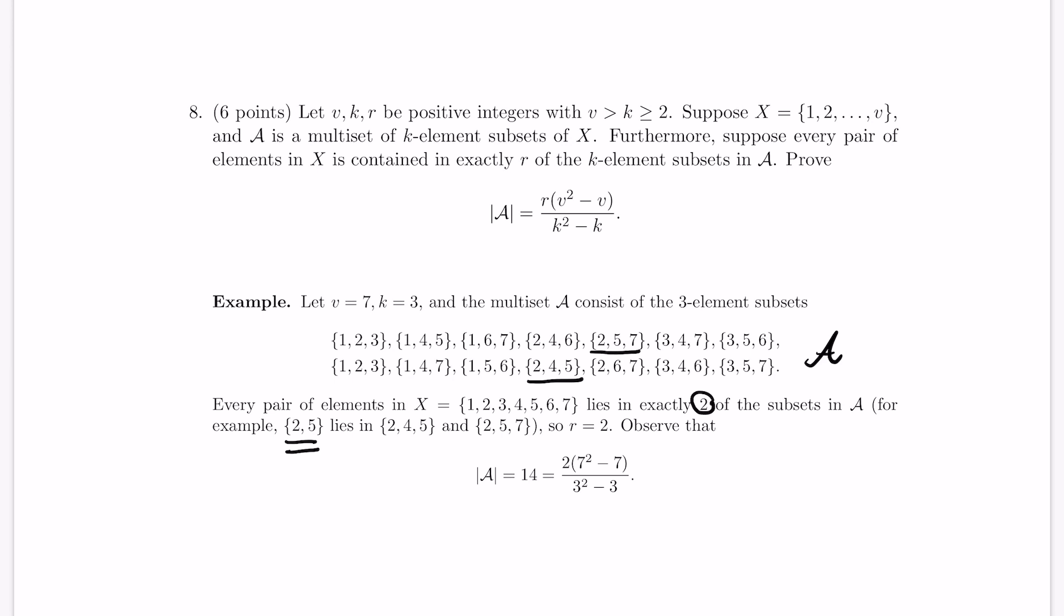So if you have that condition, then the claim is you can actually determine how many sets there are in the collection A. And that is given by this formula in terms of R, V, and K. This is actually related to something in a mathematical area called combinatorial designs. But the point here is this is a nice example of organizing information and understanding how to do combinatorial proofs. And so this is a question that I particularly like to ask.